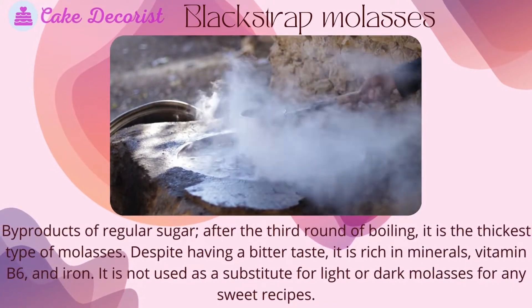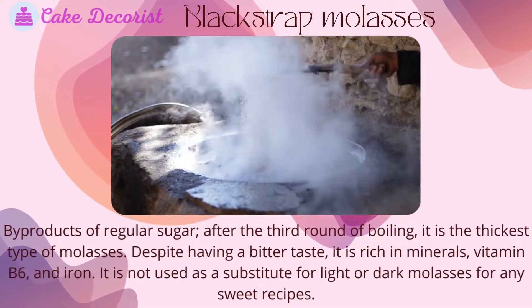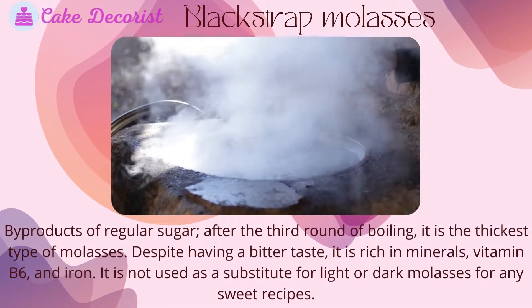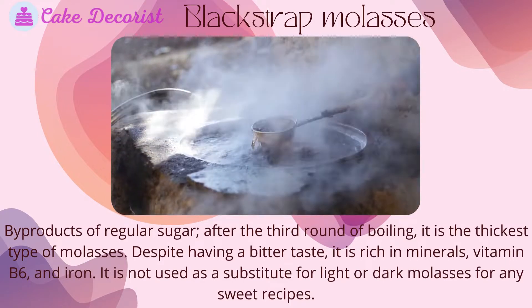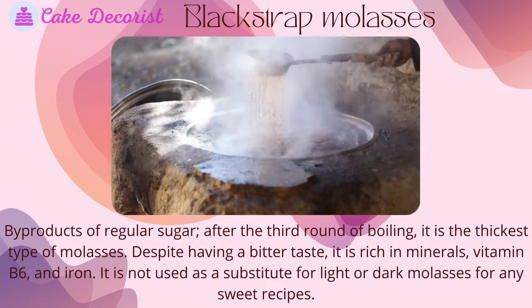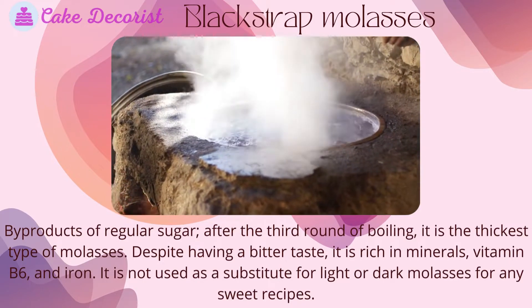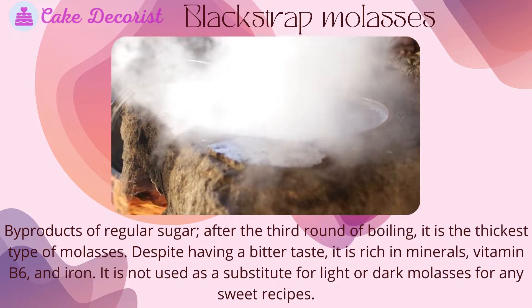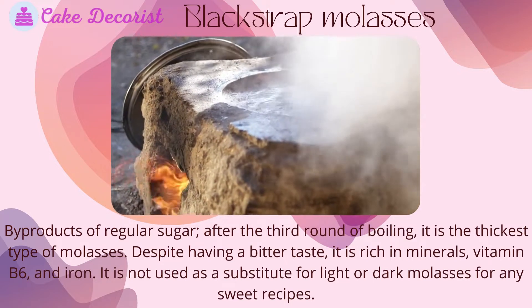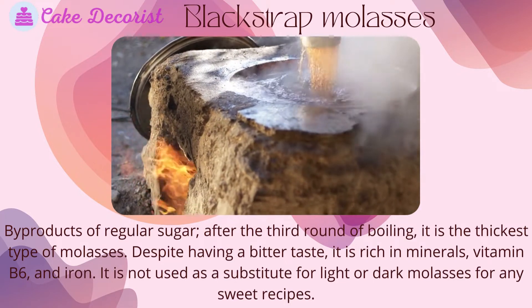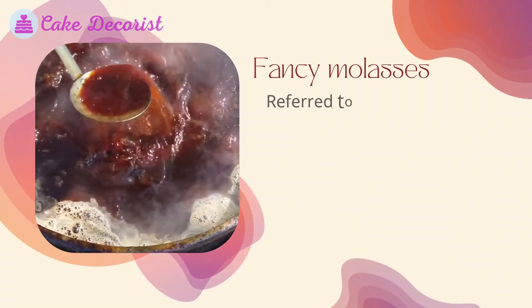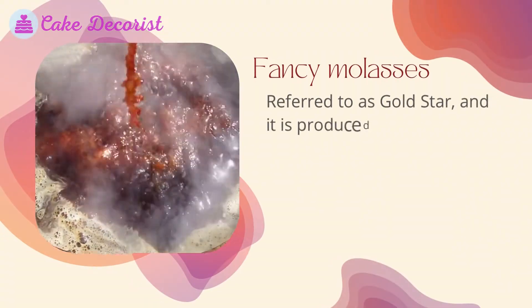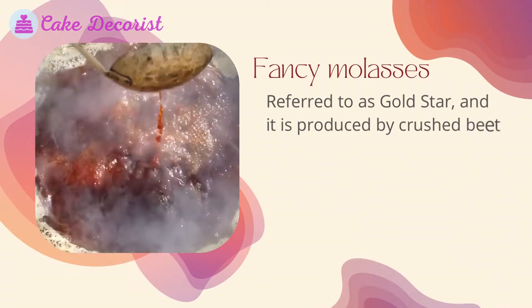Blackstrap molasses are byproducts of regular sugar after the third round of boiling — it is the thickest type of molasses. Despite having a bitter taste, it is rich in minerals, vitamin B6, and iron. It is not used as a substitute for light or dark molasses in sweet recipes.